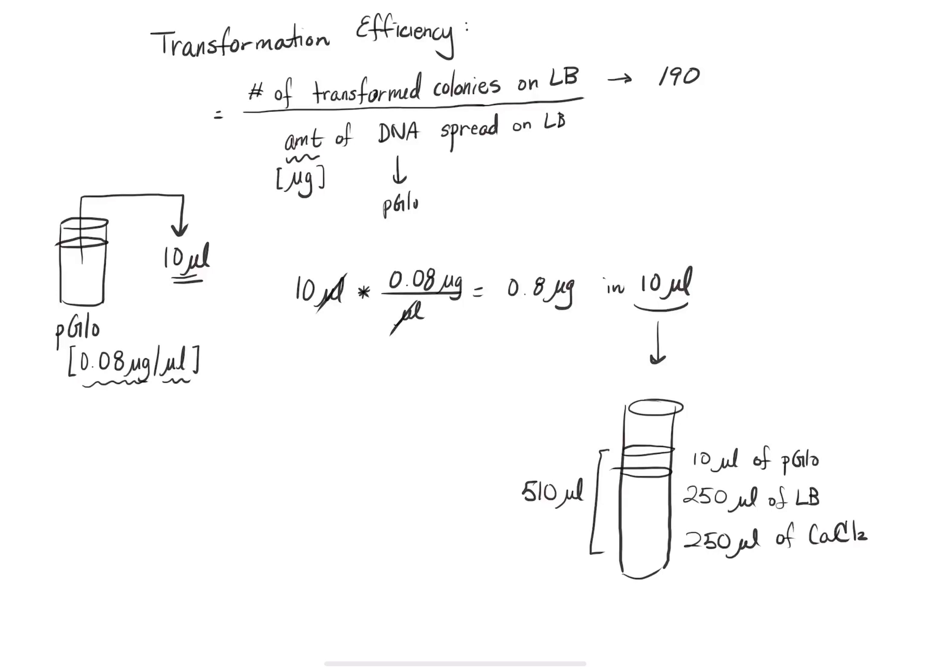Now, in that 510 microliters of solution, you have 0.8 micrograms of DNA, right, in that 510 microliters of solution. Okay. So we're getting pretty close because now that test tube is the tube from which you guys transfer the solution to the plate. But we have to take that into account because, remember, from this 510 microliters solution, you transferred 100 microliters.